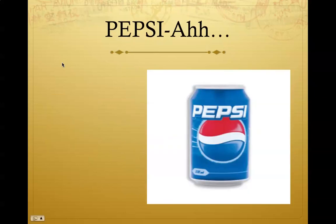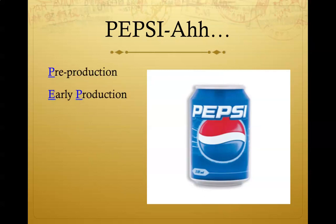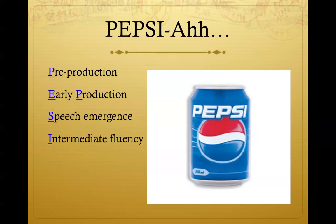Let's look at the different stages of second language development. The acronym PEPSI-AAH will help you remember the stages. We will talk about pre-production, early production, speech emergence, intermediate fluency, and finally advanced fluency. So sit back, enjoy a Pepsi, and let's review the stages of second language acquisition.